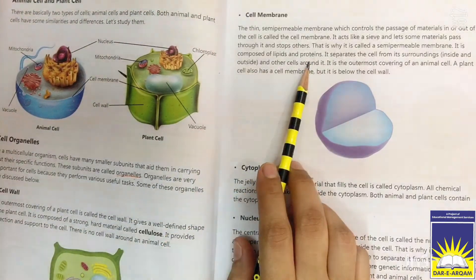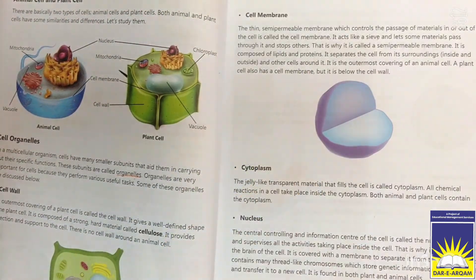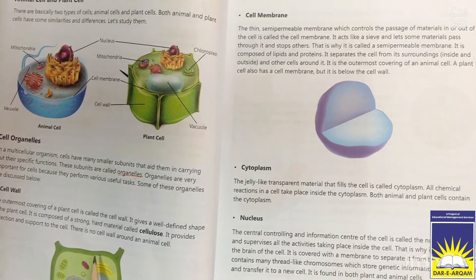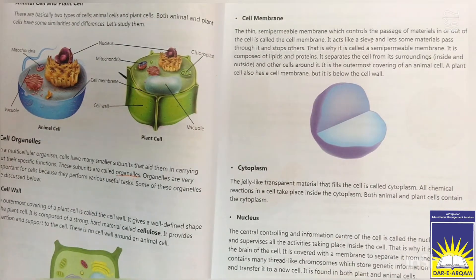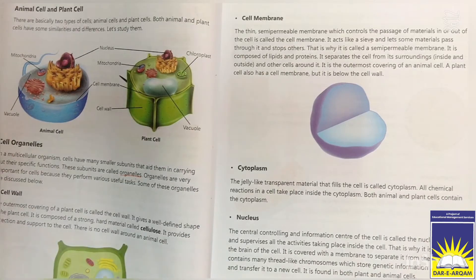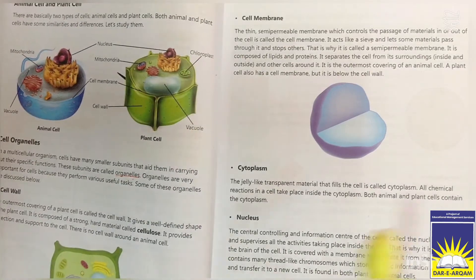Cell wall is the outermost covering in plant cells. It gives the cell a well-defined shape. It is made of a strong, hard material which is cellulose. It protects and supports the cell. Cell wall is present in plant cells but not in animal cells.